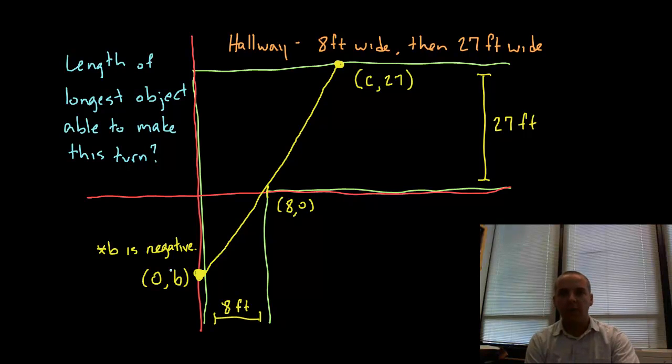In this video we're going to tackle a calculus optimization problem. Here's the problem, it's a very realistic problem. We're walking down a hallway that's 8 feet wide, and then we're going to try to make a turn into a hallway that's 27 feet wide. The question is very simple: what's the length of the longest object that's able to make this turn?